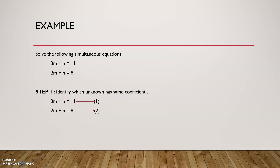Step one: we need to identify which unknown has the same coefficient. When I say coefficient, I mean the number in front of the letters. So the coefficient of m here is 3, and for n there is nothing in front, which means we imagine it as 1 — just 1n. We can rewrite and label these as equation 1 and equation 2.